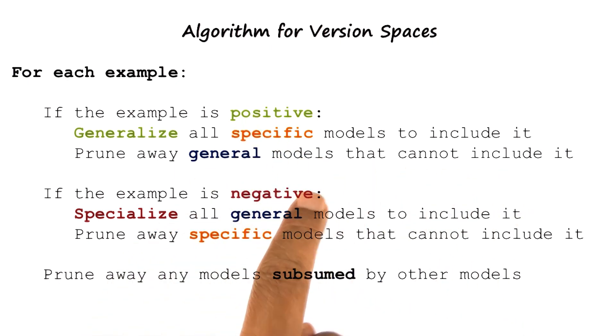If the example is negative, specialize all the general models to include it. Prune away the specific models that cannot include the negative example. Prune away any models subsumed by other models.